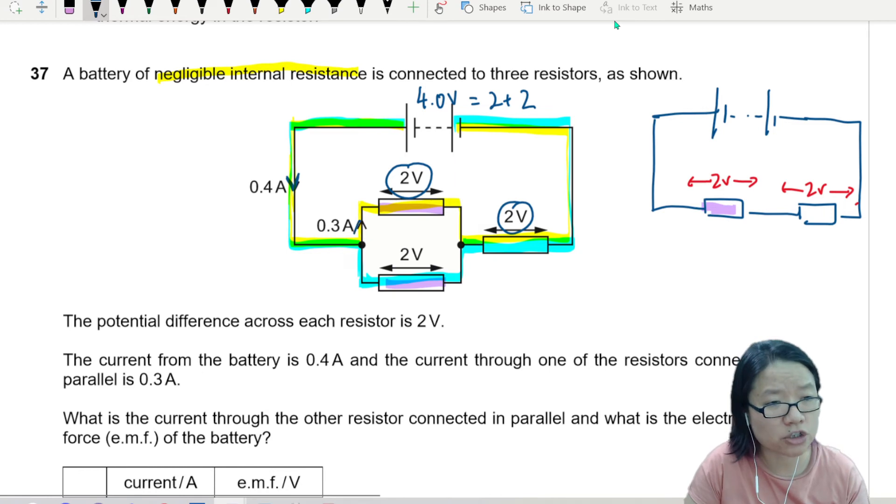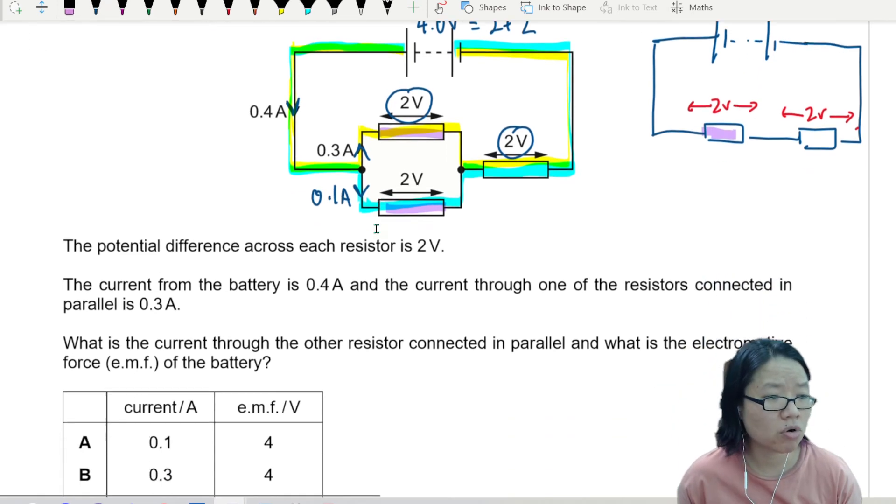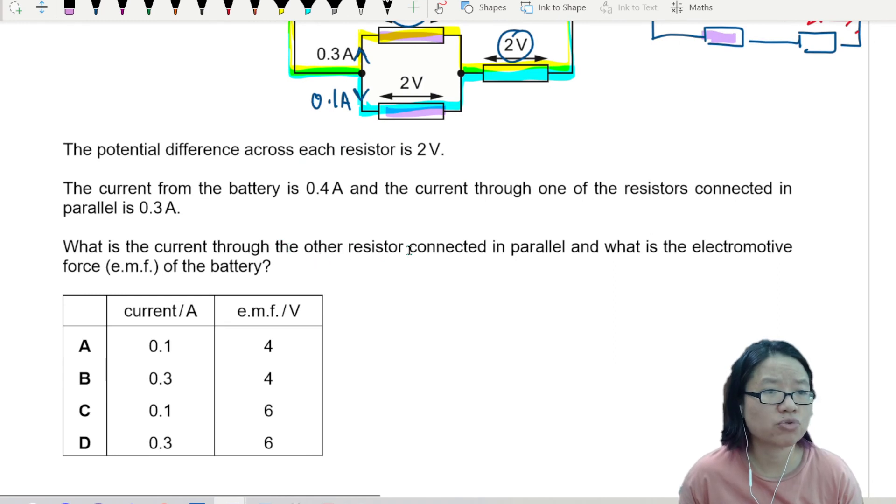The current going on top of this branch is 0.3, meaning the one that is coming to this branch is 0.1 amperes. They split and then they combine again. So what is the current through the other resistor connected in parallel? 0.1, 0.1.